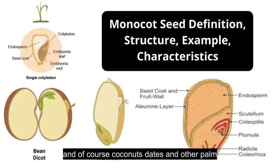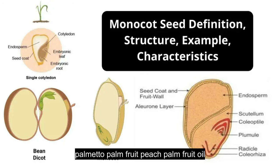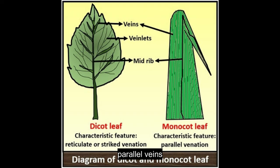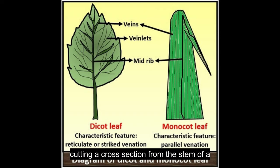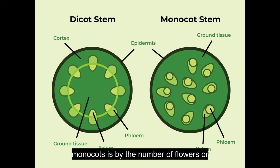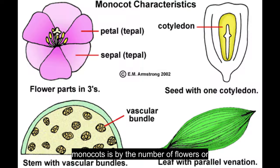And of course coconuts, dates and other palm fruits such as the pindo palm fruit, saw palmetto palm fruit, peach palm fruit, oil palm fruit and betel nut palm fruit. Monocot plants have one cotyledon. They also have long narrow leaves with parallel veins. Cutting a cross section from the stem of a monocot shows the vascular bundles scattered around in the plant tissue. Another key characteristic for identifying monocots is by the number of flowers or flower parts, which are arranged in groups of three.